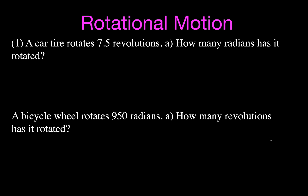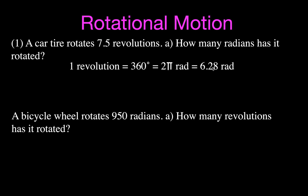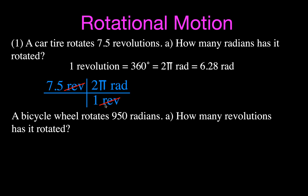Example 1: converting between rotations and radians. A car tire rotates 7.5 revolutions — how many radians is that? One revolution equals 360 degrees, which equals two pi radians (about 6.28 radians). Using a unit conversion grid, we put revolutions on the bottom and radians on top; they cancel, giving us 15 pi radians, or about 47 radians.